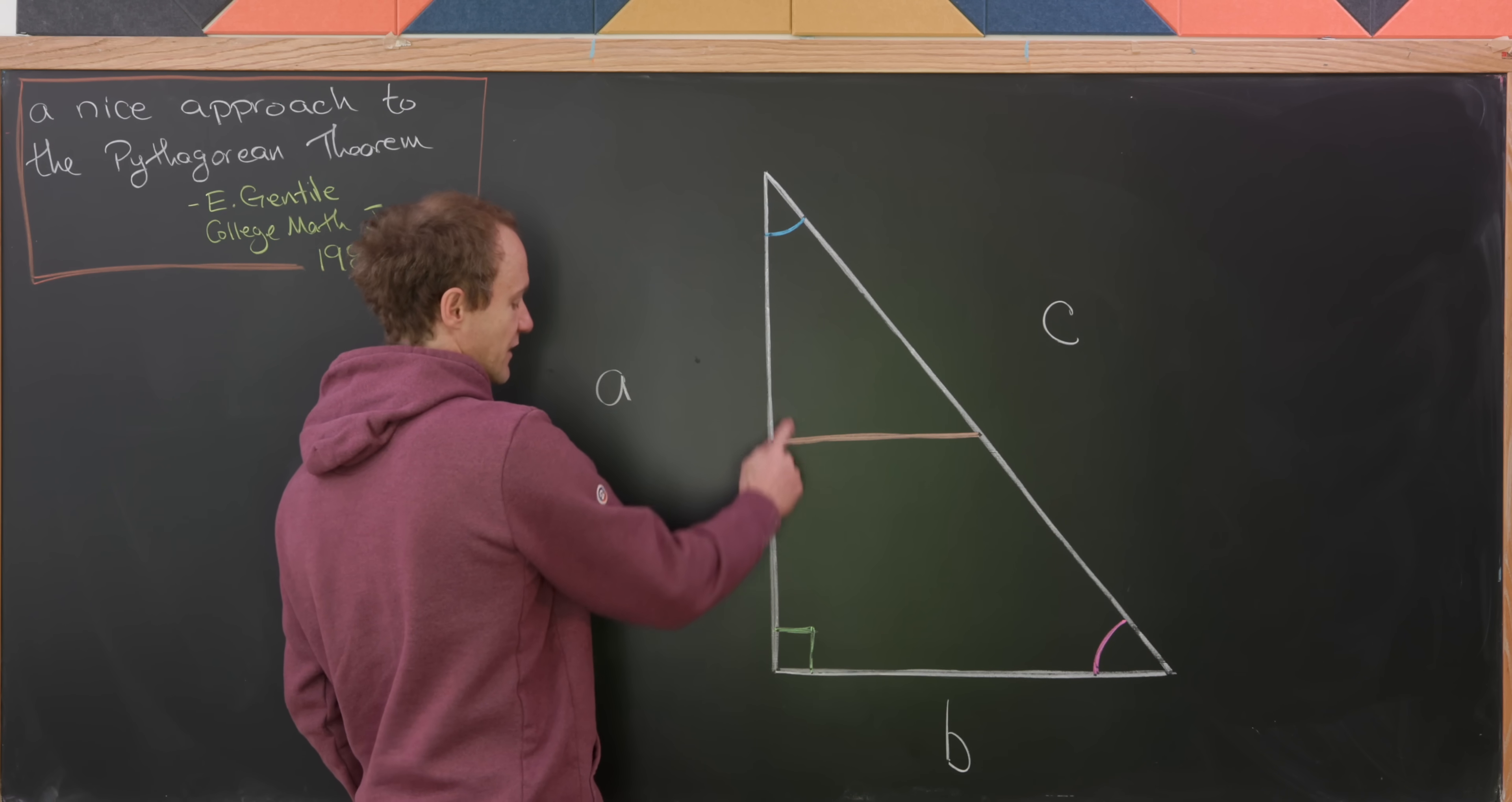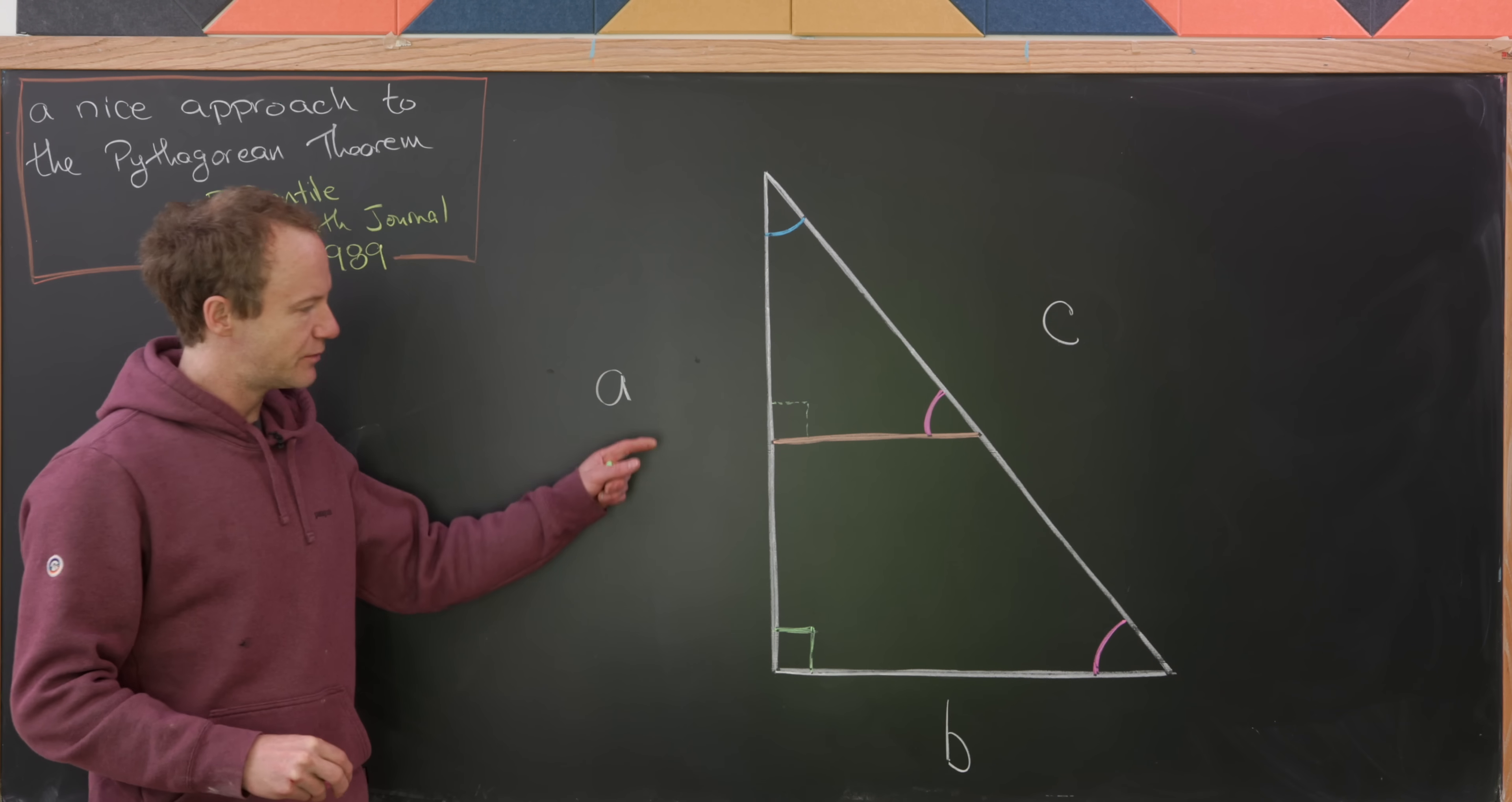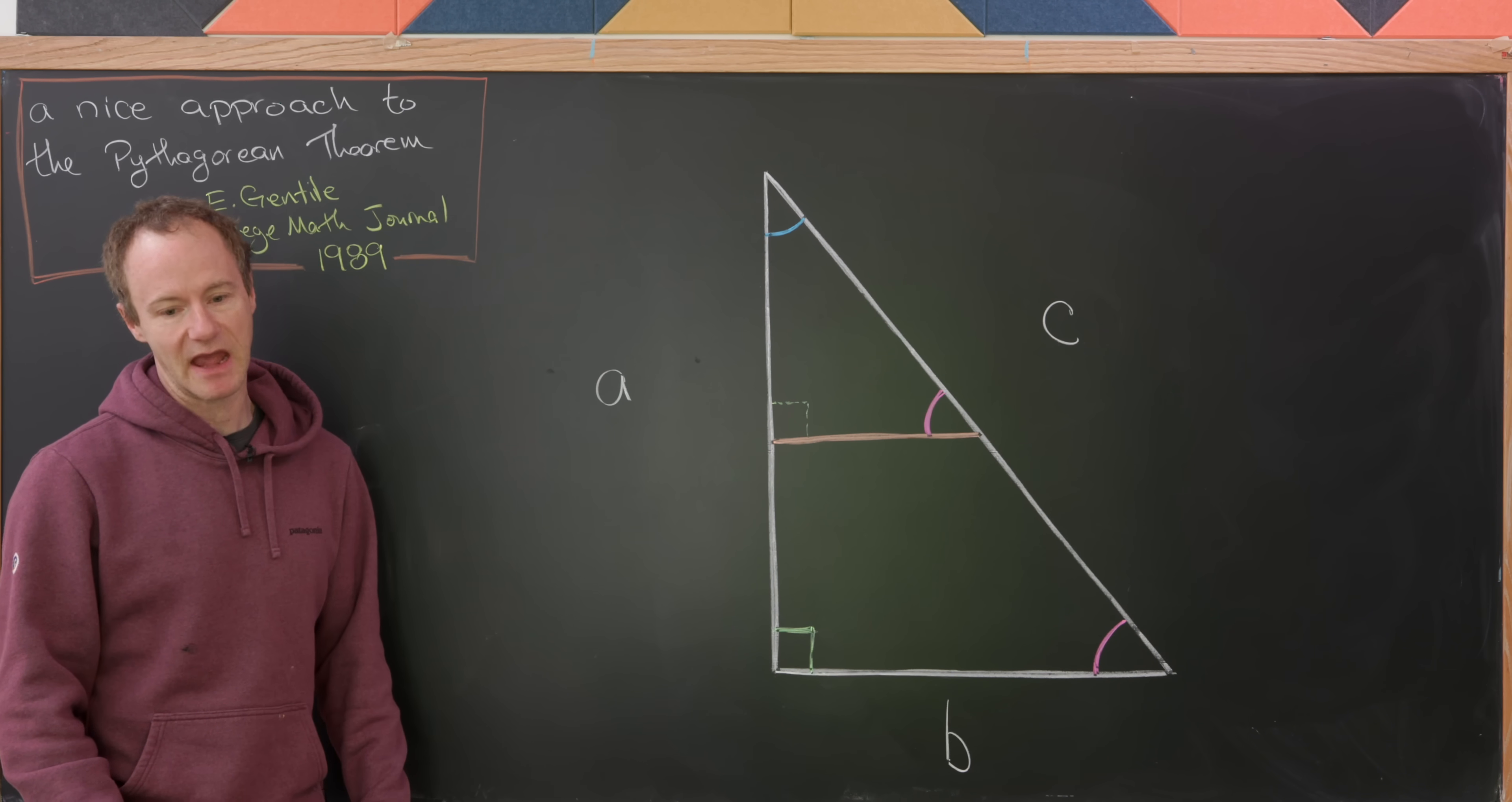Let's observe that this angle that we've made here is a right angle again. And then also, we know that this angle over here has measure magenta as well. That's simply because whenever you put parallel line segments like this into a triangle, you get a smaller triangle that's similar to the original triangle, which means it has the same angles.